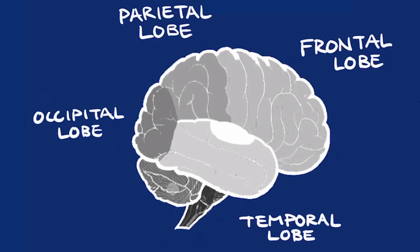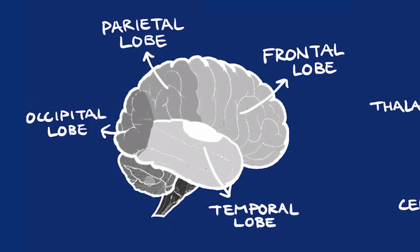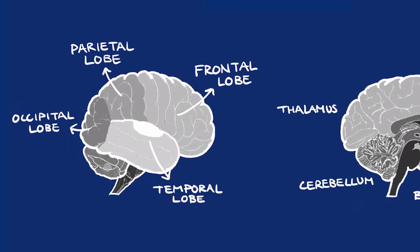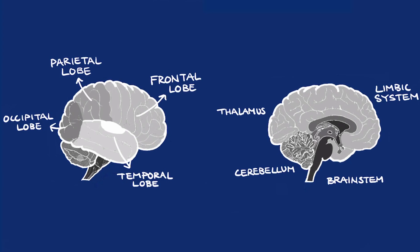The brain is a highly structured organ that localizes processing of different functions to different areas. Auditory stimulus is primarily processed here in the temporal lobe. Visual stimulus is processed here in the occipital lobe. Tactile sensory information is processed in the parietal lobe, and motor functions as well as executive functions like planning and attention are processed in the frontal lobe. These are the four main lobes of the cerebral cortex.